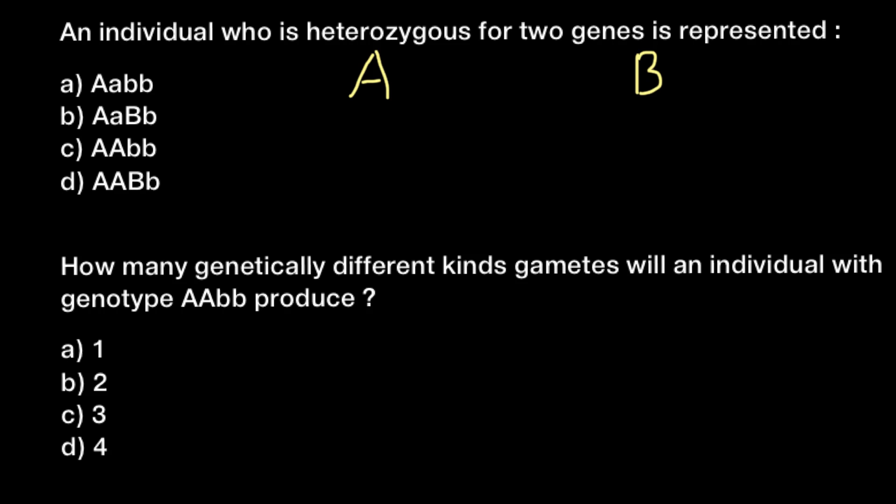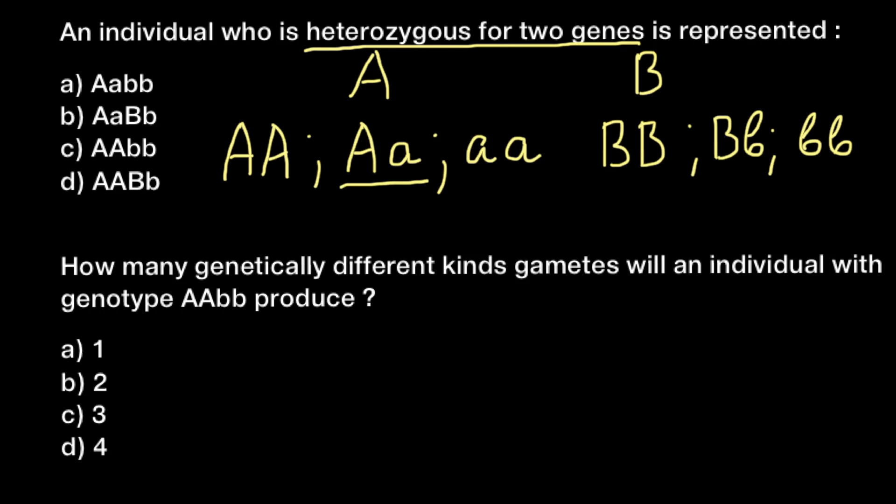So for gene A these combinations can be capital A capital A, we call this homozygous dominant; another combination can be capital A small a, we call this heterozygous; and the last one small a small a, we call this homozygous recessive. The same three combinations exist for gene B: homozygous dominant, heterozygous, and homozygous recessive. So an individual who is heterozygous for two genes would be of the genotype capital A small a and capital B small b. So this is answer B.